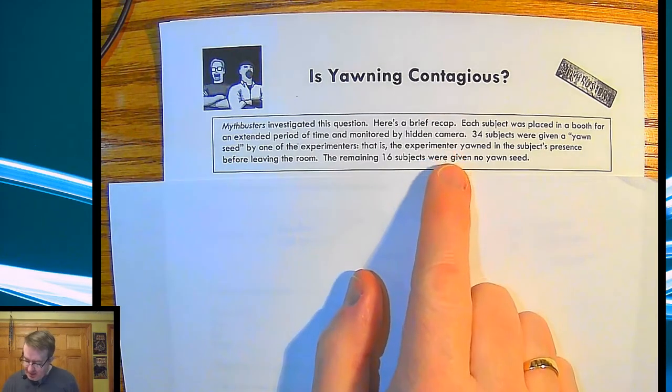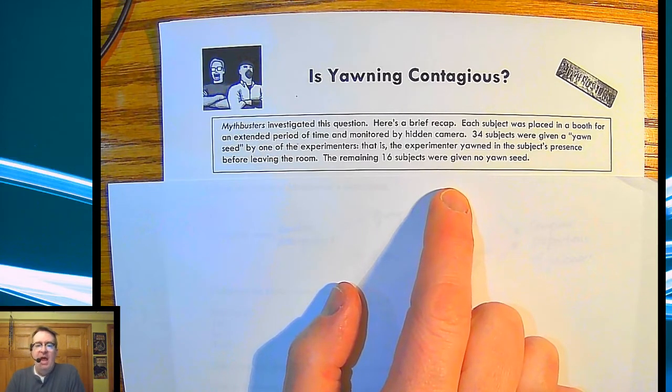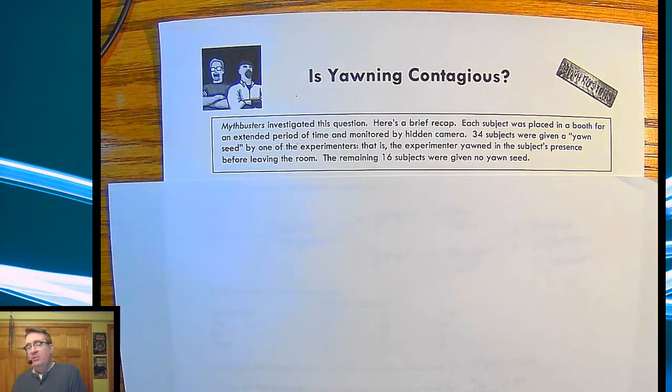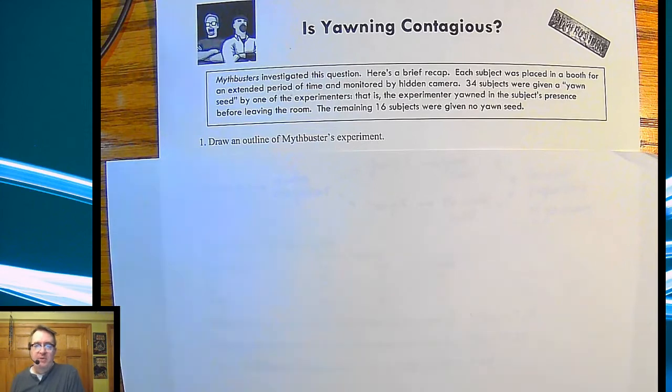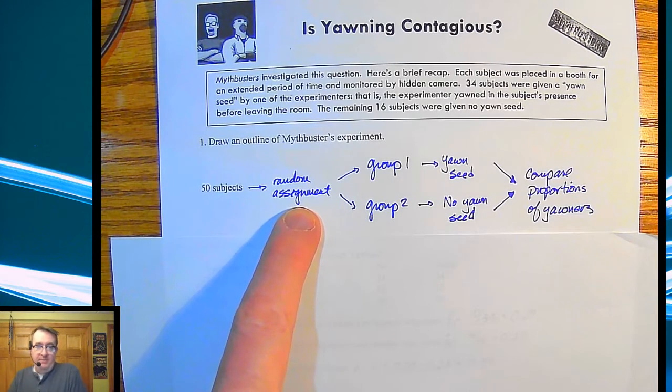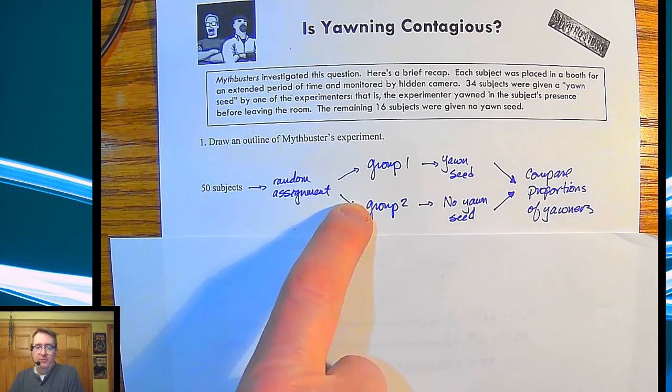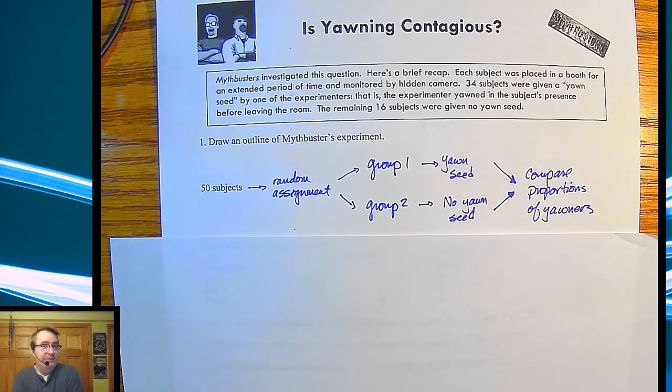But what they ended up doing was this. They had 34 subjects and they monitored them for a fixed period of time. And they were given a yawn seed. So one of the experimenters came in, yawned, and then left. And they kept track of, did that actually make the people who saw the yawn, yawn? And so 34 of them were given the yawn seed by the experimenters and 16 were not. The first question that we ask is kind of a review, draw an outline of the Mythbusters experiment. And so the setup should look like this. We've got 50 subjects. We randomly assigned them to a group, group one and group two. Group one was given a yawn seed. Group two was given no yawn seed. And then we compared the proportions of yawners at the end.